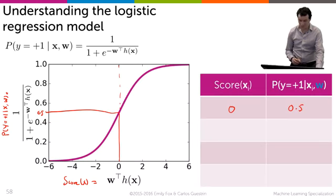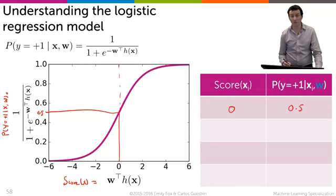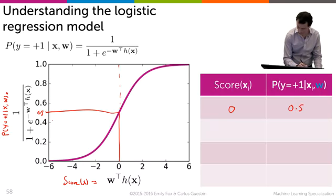Now what I observe is everything to the left of 0 has score less than 0, so we should be predicting that these points on the left have y hat equals minus 1.